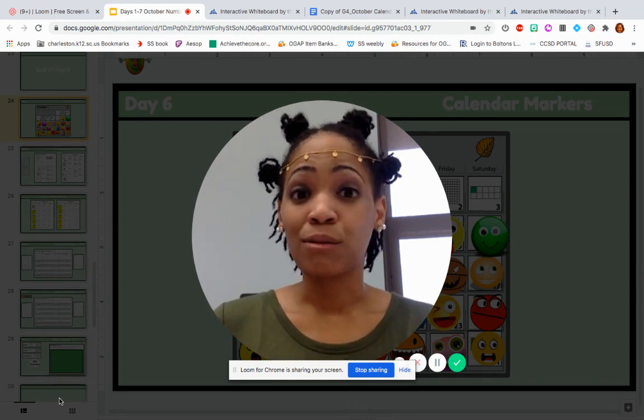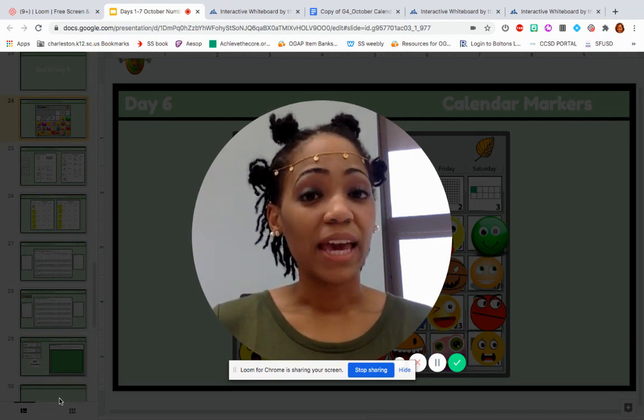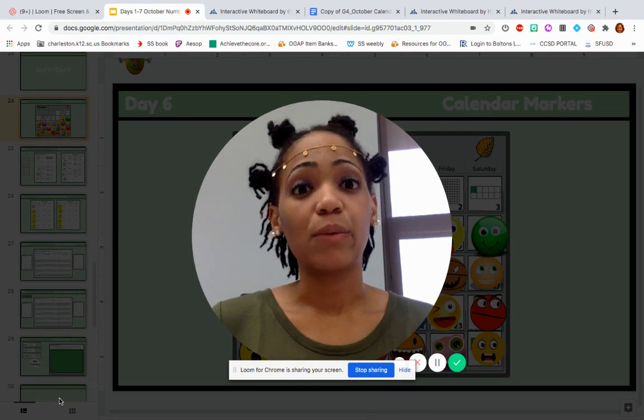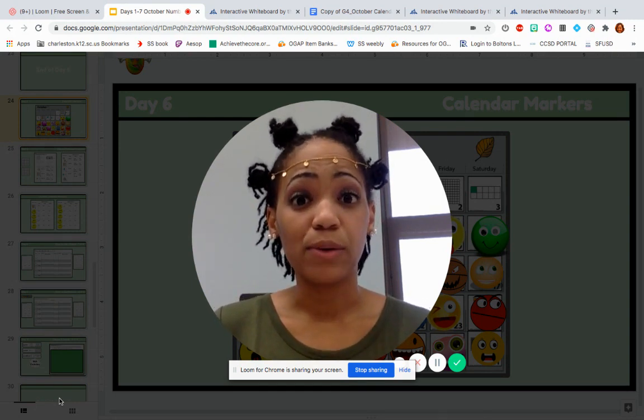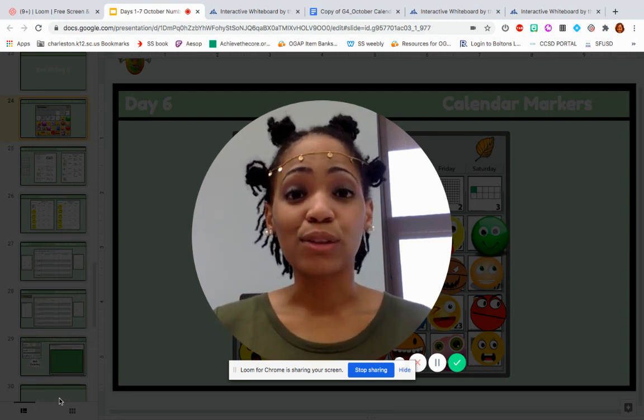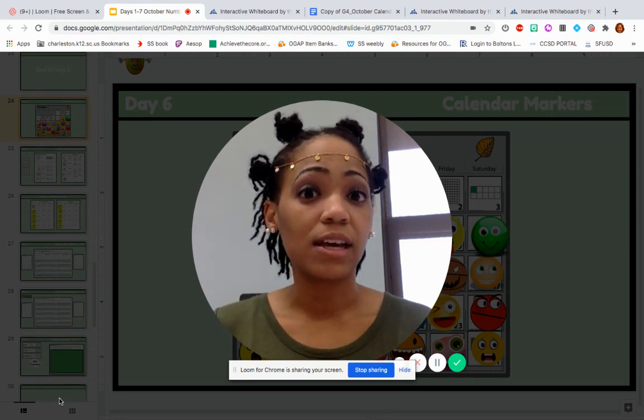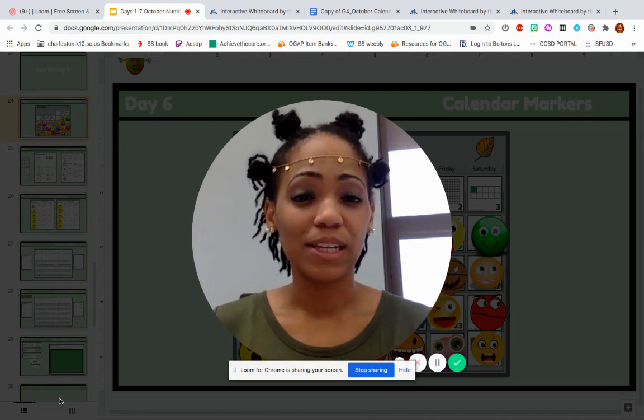We're going to update that on our observation chart. Then we're going to update our race to the millions. Finally, we're going to go over page two of the story problems that we began the other day. You guys were supposed to finish those, so hopefully you have and you're ready to look at the answers or look and think through the strategies that other students have used to solve this same problem. So let's jump right in.